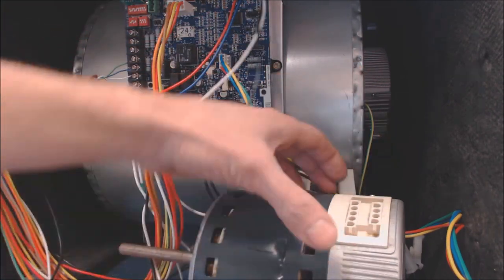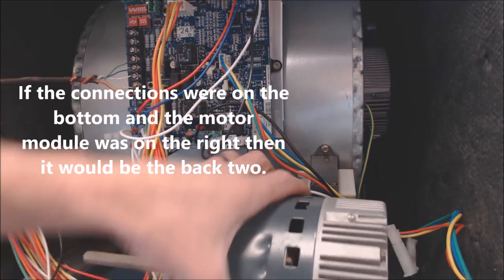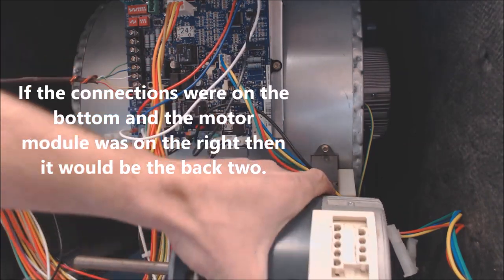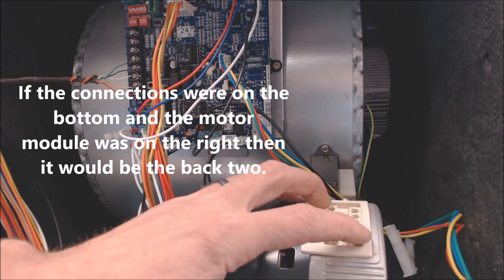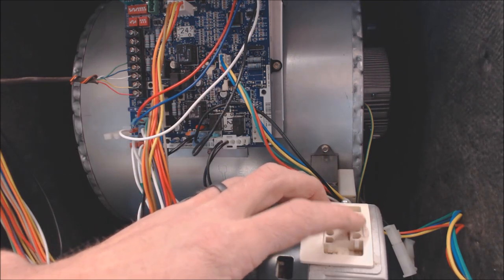If this is upside down, with this connection down lower, then it will be the back two. But the reality is, what you need to do is verify what this says. It says C and Rx.